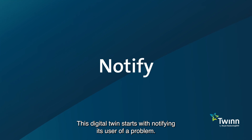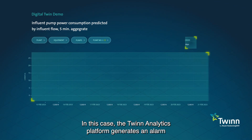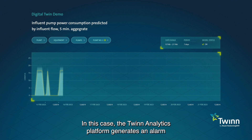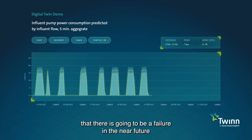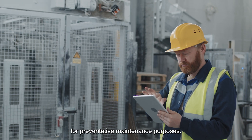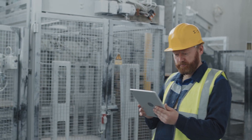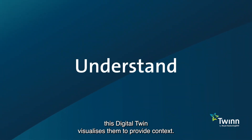This digital twin starts with notifying its user of a problem. In this case, the twin analytics platform generates an alarm that there is going to be a failure in the near future for preventative maintenance purposes.